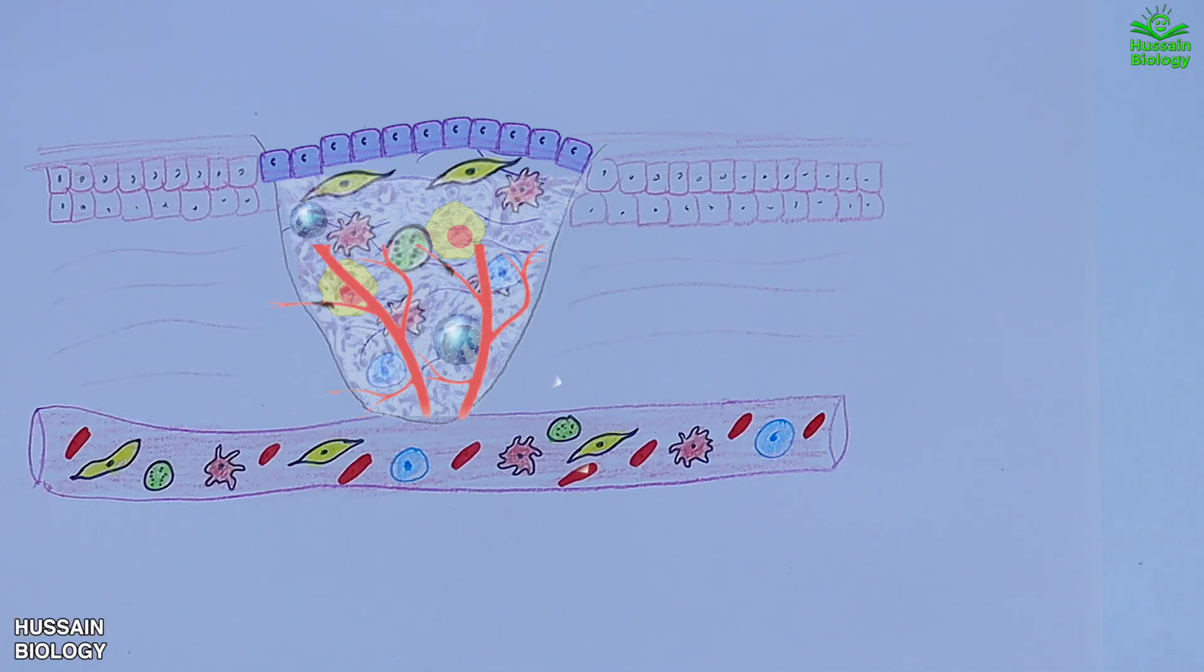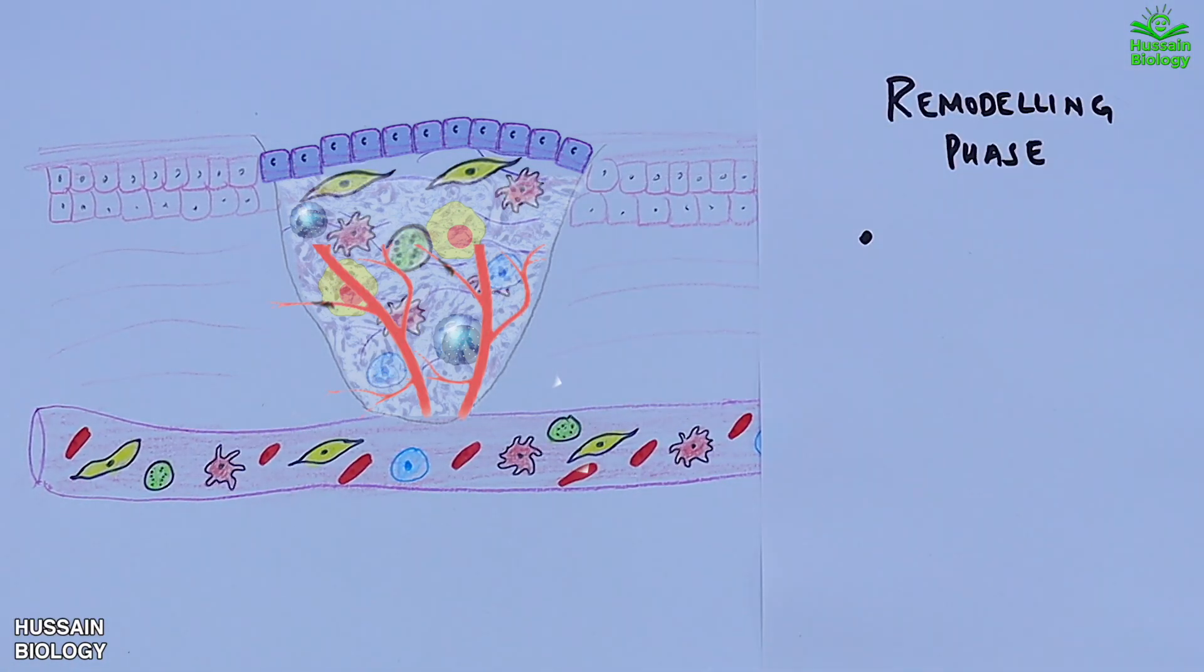We also see the matrix production and scar formation initiation. Now we move towards the remodeling phase, that's the last phase of wound healing, where first of all we see the scar is completely established.